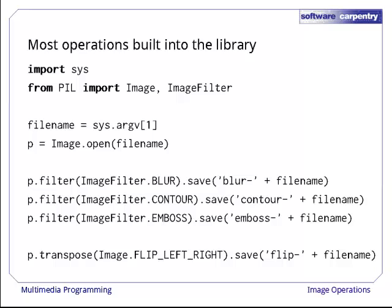Here's a quick example that shows what kinds of operations are available. Along with the core Image module, we import ImageFilter from the Python Imaging Library. We then load an image from a file and apply three filters to it. Each of these filters is identified by a symbolic name, such as ImageFilter.CONTOUR for a contouring filter. We save the results in files with names derived from the original file's name, and then use the transpose method with IMAGE.FLIP_LEFT_RIGHT as an argument to flip the image left to right.